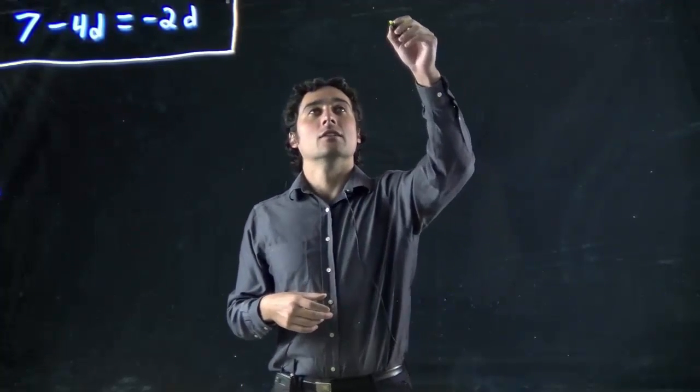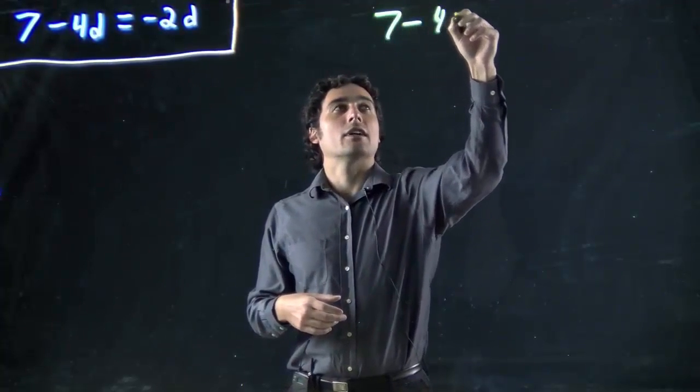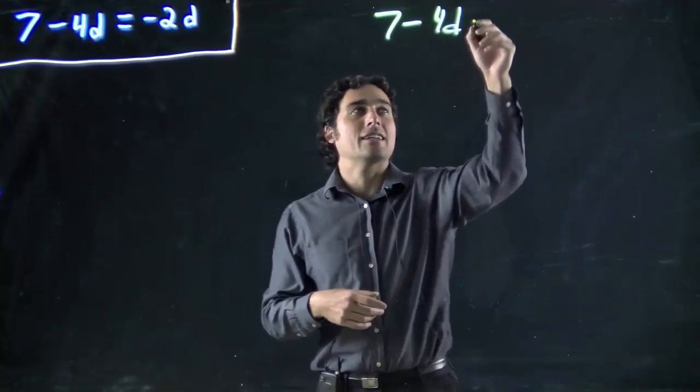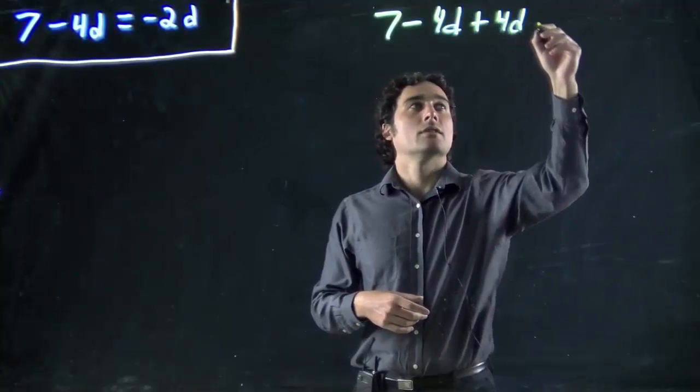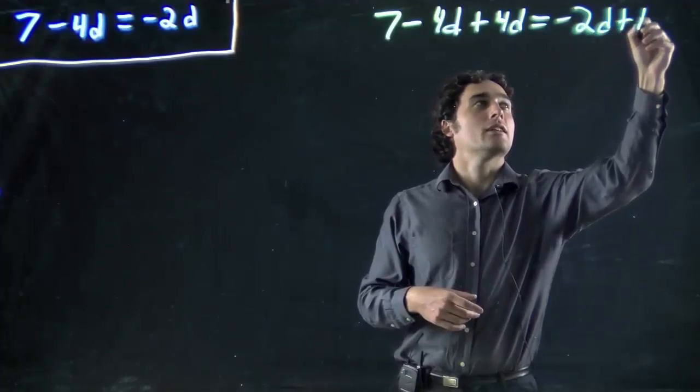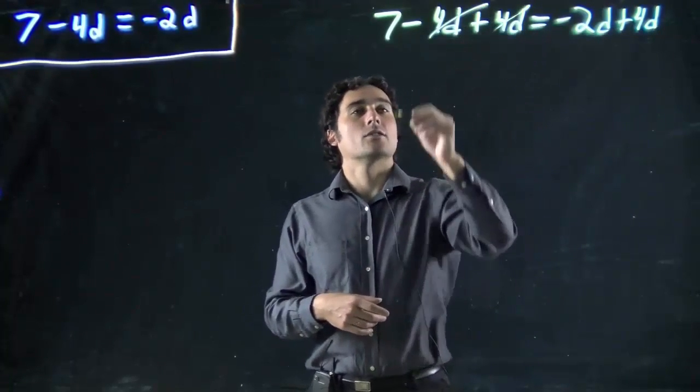We have 7 minus 4d and we want to get rid of this 4d on one side. As always we do the opposite—we have minus so we have to add 4d, but we have to do that the same on the other side as well. So plus 4d here, and these will cancel out.